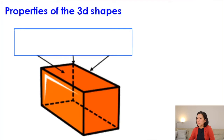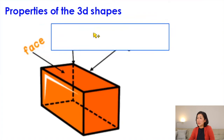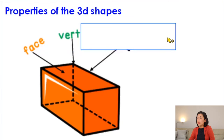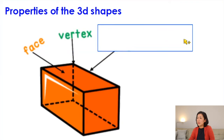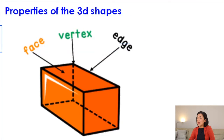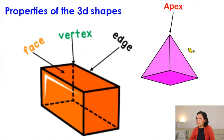Now let's move on to the properties of 3D shapes. There are three things: faces, corners — which are called vertices (or vertex when there is just one) — and edges, which are formed when two faces meet. Remember that for a pyramid, the special pointy vertex at the top is called the apex.